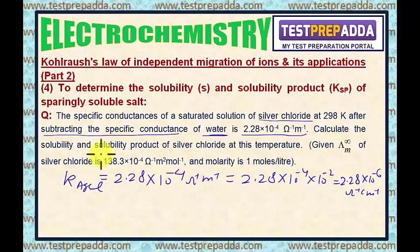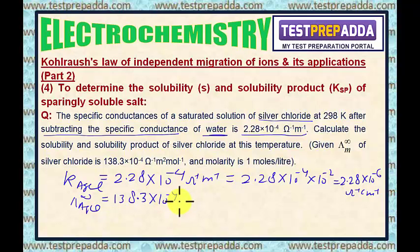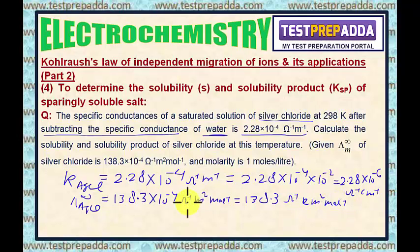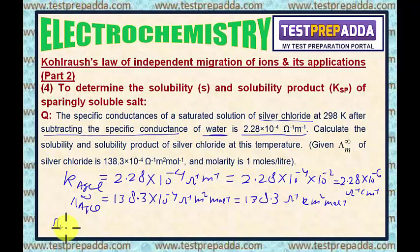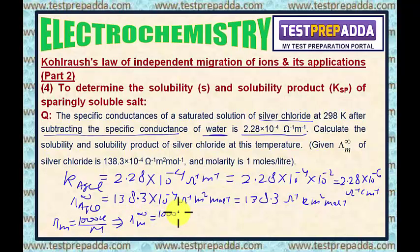We need to find the solubility and solubility product. Given: λM∞ for silver chloride = 138.3 × 10⁻⁴ Ohm⁻¹ m² mol⁻¹, which can be written as 138.3 Ohm⁻¹ cm² mol⁻¹, since 1 Ohm⁻¹ m² mol⁻¹ = 10⁴ Ohm⁻¹ cm² mol⁻¹. Since AgCl is sparingly soluble, I write λM∞ = 1000K / S, where S is the solubility.